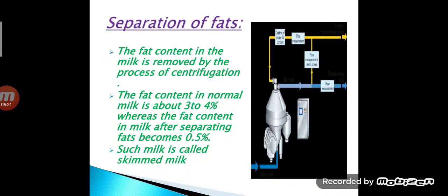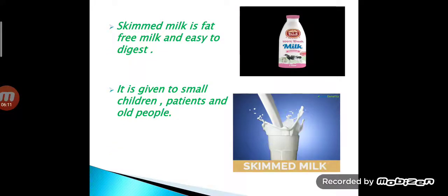The next method is separation of fats. The fat contained in milk is removed by the process of centrifugation, which means separating cream from milk. The fat contained in normal milk is about 3 to 4 percent, whereas after separating fats it becomes 0.5%. Such milk is called skimmed milk. Skimmed milk is fat-free, very easy to digest, and is given to small children, patients, and old people.